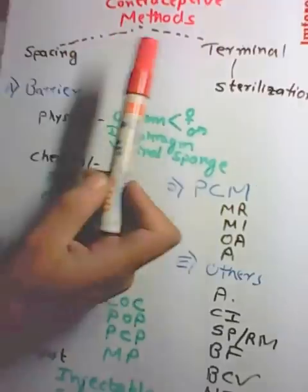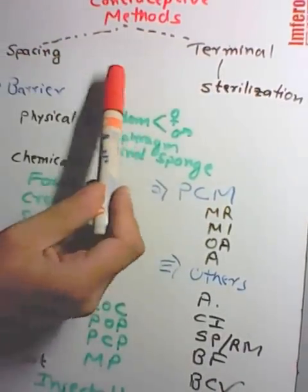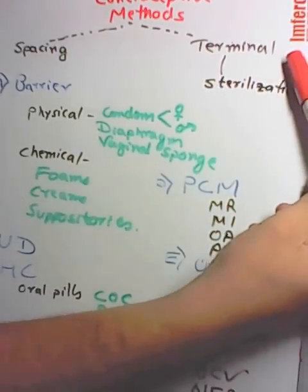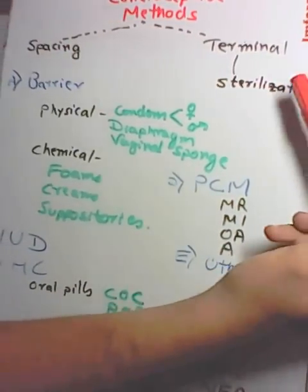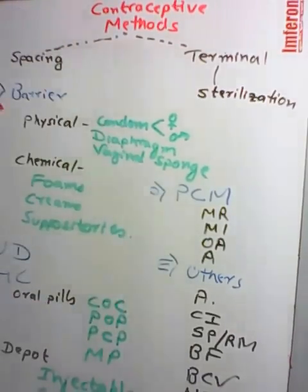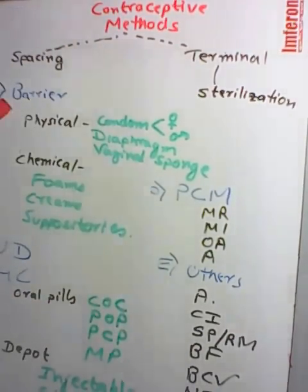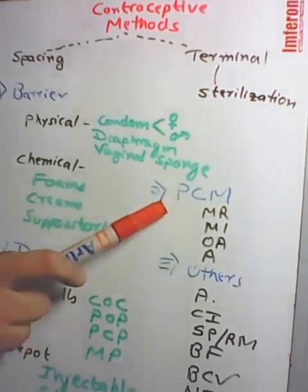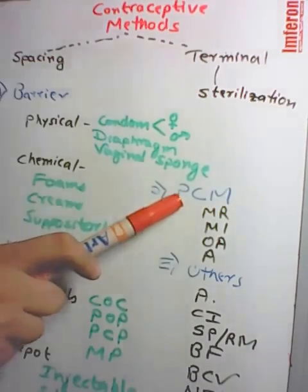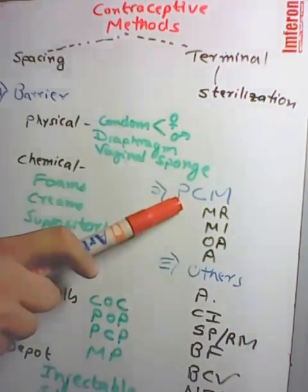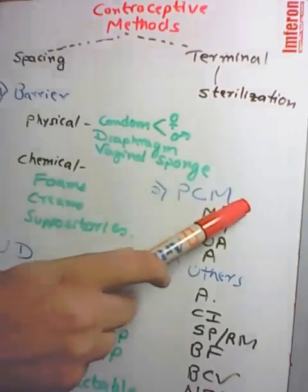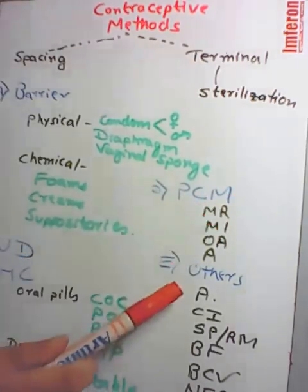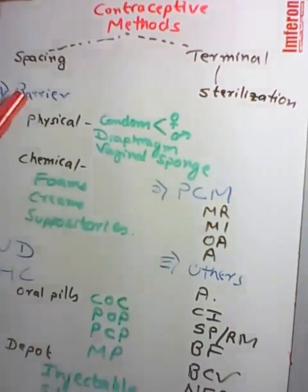To summarize the classification: spacing methods include barrier methods, IUDs, hormonal contraceptives, and post-contraception methods (PCM). Under barrier methods: physical — condom (male and female), diaphragm, vaginal sponge; chemical — foams, creams, suppositories. Under hormonal contraceptives: oral pills (combined OCP, progestogen-only pill, post-coital pill, male pill) and depot preparations (injectables, subdermal implants, vaginal rings). Under PCM: menstrual regulation (MR), menstrual induction (MI), oral abortifacient (OA), and abortion.